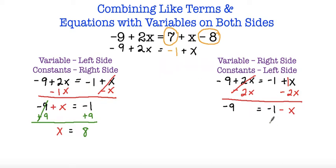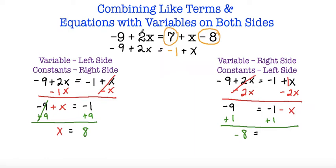In order to move the constant I'm going to use inverse operations, so I'm going to add both sides by 1. Since negative 9 and positive 1 are opposite signs I subtract, and I keep the sign of the number with the greatest absolute value, which is negative 9. So I end up with negative 8 is equal to negative x. Now to get x by itself I have to divide both sides by negative 1, because negative x is the same thing as negative 1x. So positive 8 is equal to x. We end up with the same answer using whichever method.